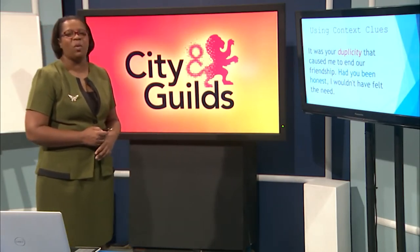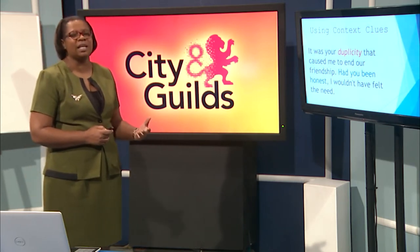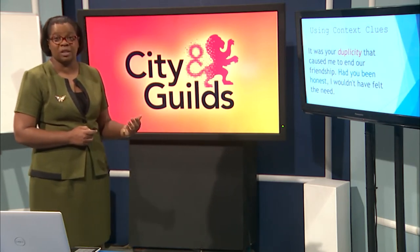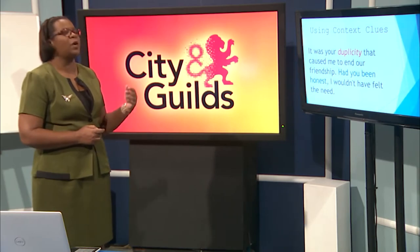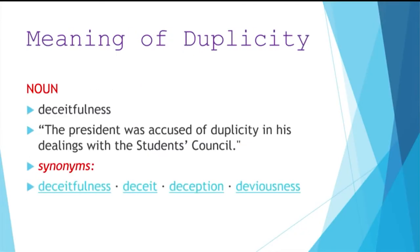So that is the reason why the friendship ended. What the writer has done in this example is given you some clues to help you figure out the meaning of the unfamiliar word. When we look in the dictionary, we find the word duplicity — it is a noun and it means deceitfulness.